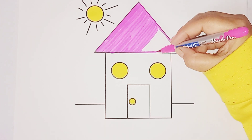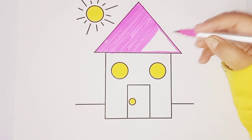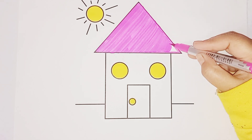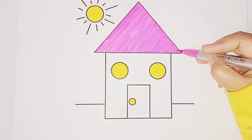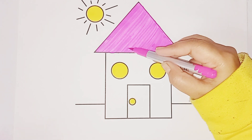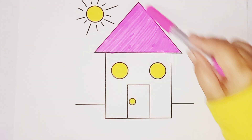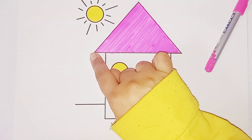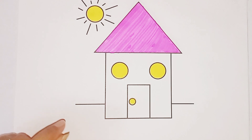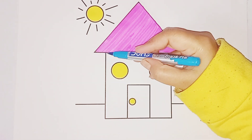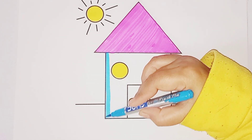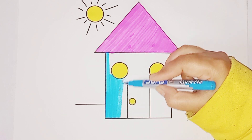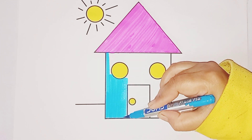Which color is this, kids? Do you know which color is this? This is pink color, and the shape is triangle. Triangle has three sides: 1, 2, 3. Now we use sky blue color in the square — this is the room of the shape house. The shape is square and the color is sky blue.